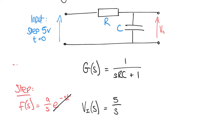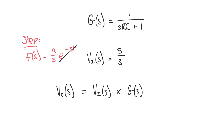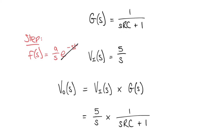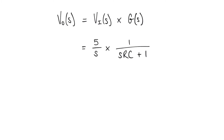As stated at the beginning, we determine the system response by multiplying the input in the S domain by the transfer function, also in the S domain. So the output voltage VO of S equals the input voltage in the S domain multiplied by the transfer function. Substituting in: 5 over S multiplied by 1 over SRC plus 1, which gives us 5 over S times the bracket SRC plus 1.